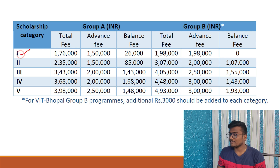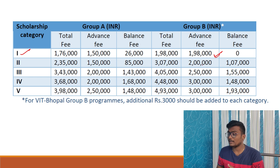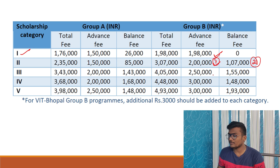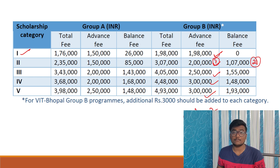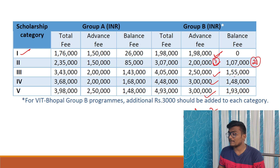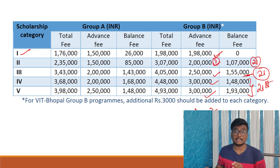For Category 1: advance fee is ₹1,98,000, which is also the total fee — so no balance fee. For Category 2: advance fee is ₹2 lakhs before July 7th, and remaining ₹1,07,000 is due before July 21st. Category 3: advance fee ₹2,50,000; balance ₹1,55,000. Category 4: advance fee ₹3 lakhs; Category 5: advance fee ₹3 lakhs. If you miss the advance fee deadline of July 7th, your admission will be cancelled.